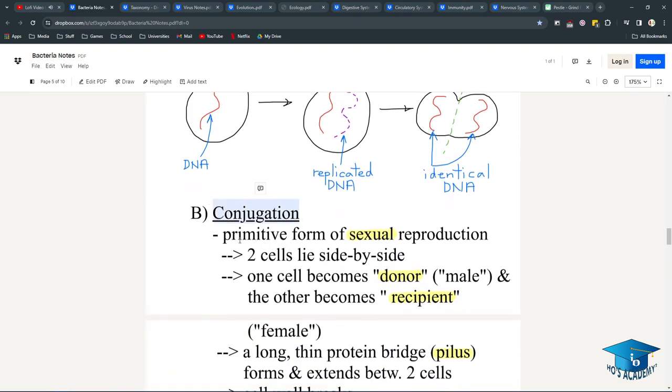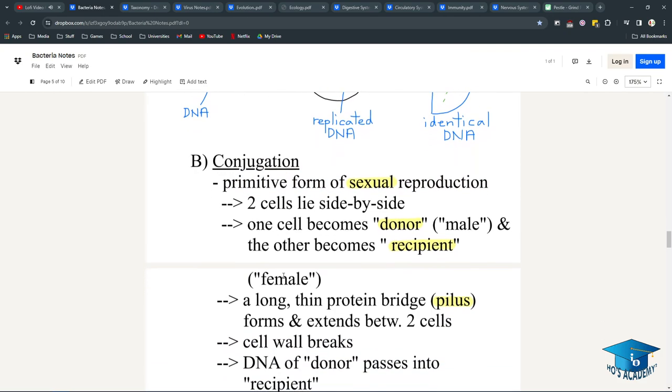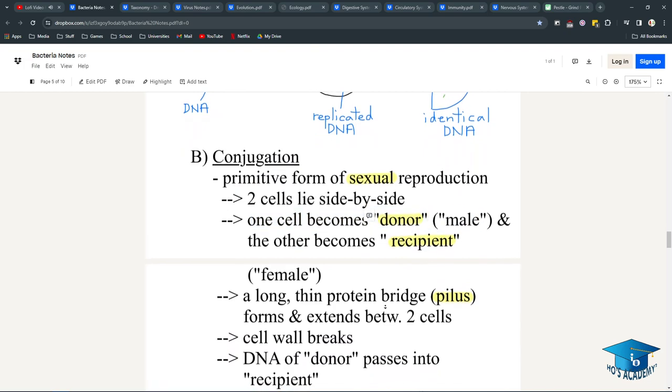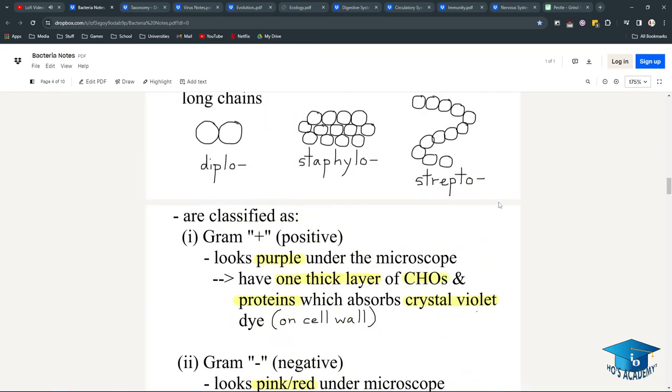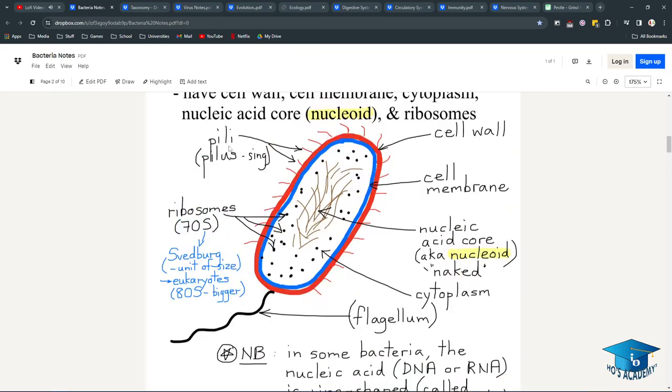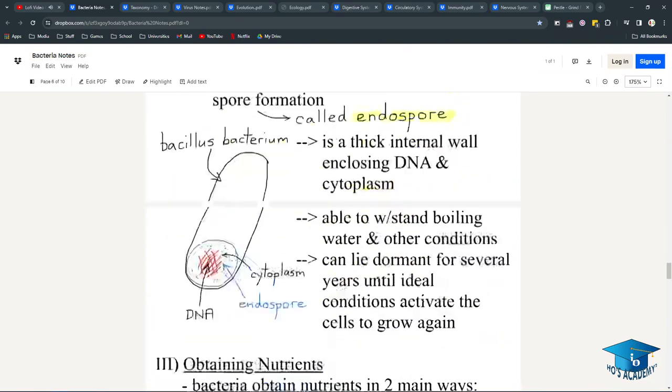Conjugation is a primitive form of sexual reproduction, meaning you need a partner to achieve it. Two cells lie side-by-side. One cell becomes the donor, the male, and one cell is the recipient, the female. A long, thin protein bridge, the pilus, will transfer genetic material.